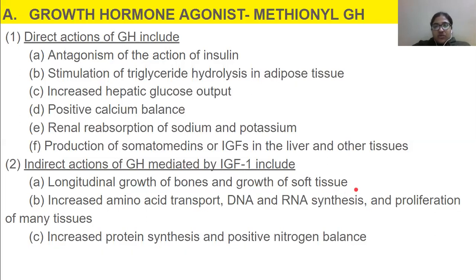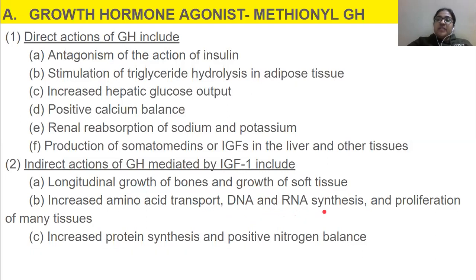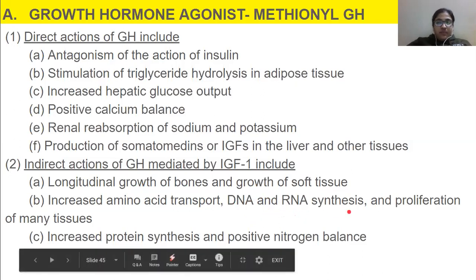Further indirect actions of GH mediated by IGF-1 include increased amino acid transport, increased DNA and RNA synthesis — meaning cell duplication and protein manufacture are both promoted — and proliferation of many tissues. There is also increased protein synthesis and a positive nitrogen balance; the more nitrogen available, the more protein the body can produce, supporting overall growth.